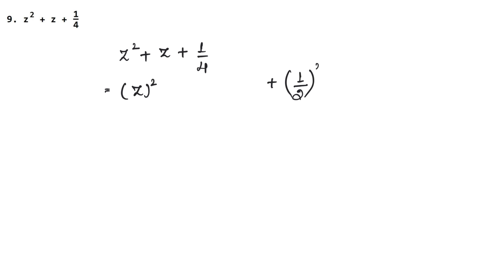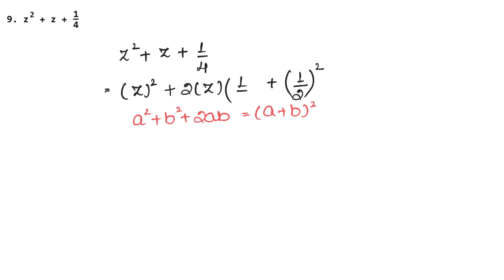In this question, we write 1/2 as (1/2) whole square. Using the formula a² + b² = (a + b)², the answer is (z + 1/2) whole square. Let's do the next question now.